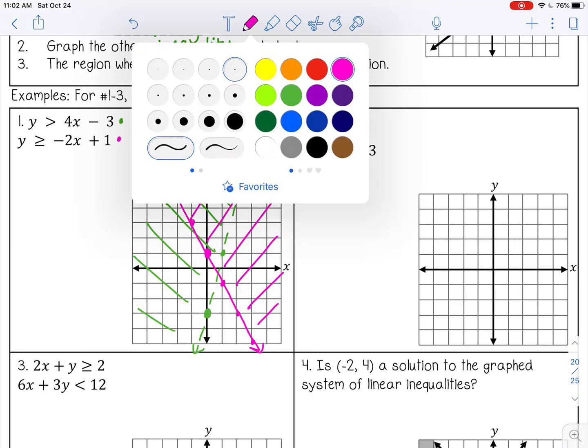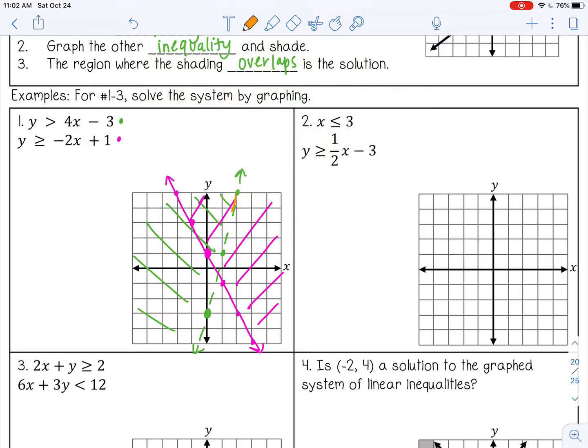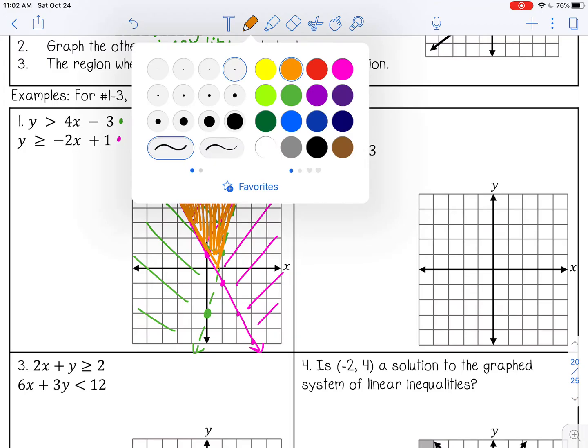And the region where they overlap is here. It includes the pink line, it does not include the green line, because it's dashed. So everything inside here. Alright, let's try number 2.